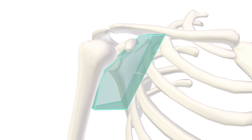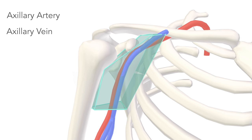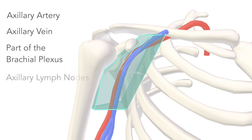These contents are the axillary artery, axillary vein, the brachial plexus or a schematic portion of it, and axillary lymph nodes.